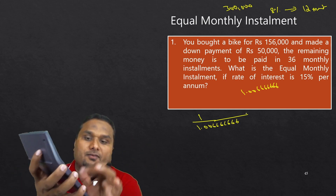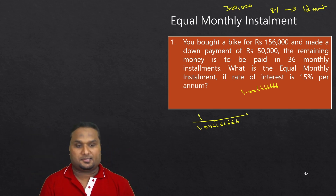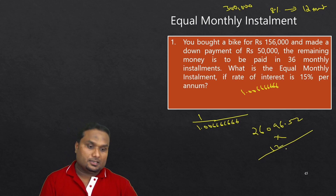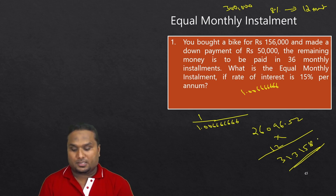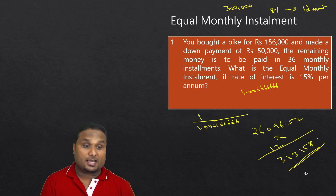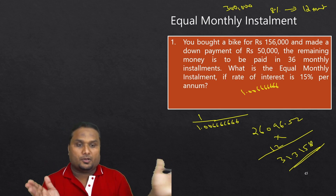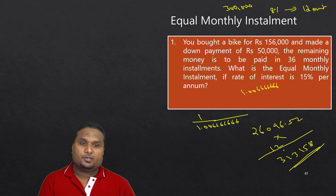₹3,00,000 ÷ 11.495 = EMI of ₹26,096.52. Total payment over 12 months: ₹26,096.52 × 12 = ₹3,13,158. The simple interest on ₹3,00,000 at 8% would be ₹24,000, but since the principal reduces each month due to your payments, the actual interest paid is less than ₹24,000. Total interest = ₹13,158.